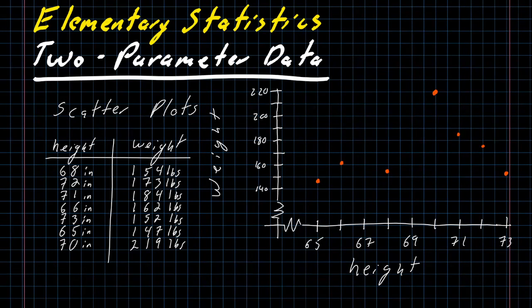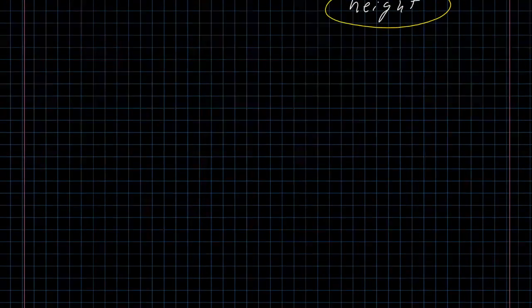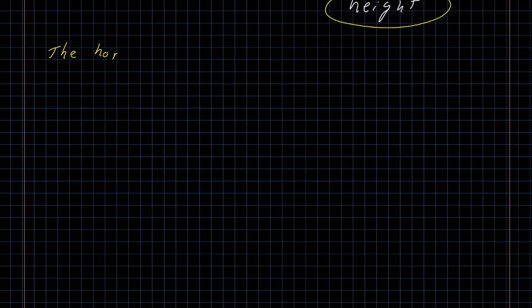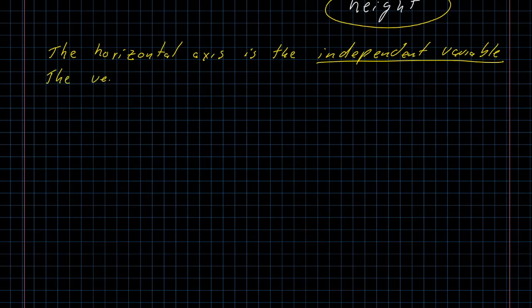But before I get there, I want to talk a little bit more about my decision to put height on the horizontal axis and weight on the vertical axis. In this particular scenario, I could have just as easily chosen to do that in the other order, with height on the vertical axis and weight on the horizontal axis. But there are some situations where it actually does matter. The measurement that we put on the horizontal axis is called the independent variable and the vertical axis is the dependent variable.